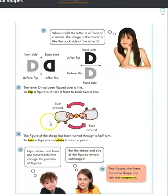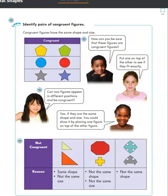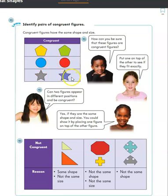No matter what we do — slide it, flip it, or turn it — it's going to stay the same size and shape, which means it would be congruent. Even though these two are facing different directions and one has been flipped, they are still congruent because they're the same size and the same shape. In this box, all the figures are congruent because if we were to put them one on top of another, they would fit exactly. Down here, these two triangles are not congruent because one is much bigger. These two are not even the same shape or size — not congruent.